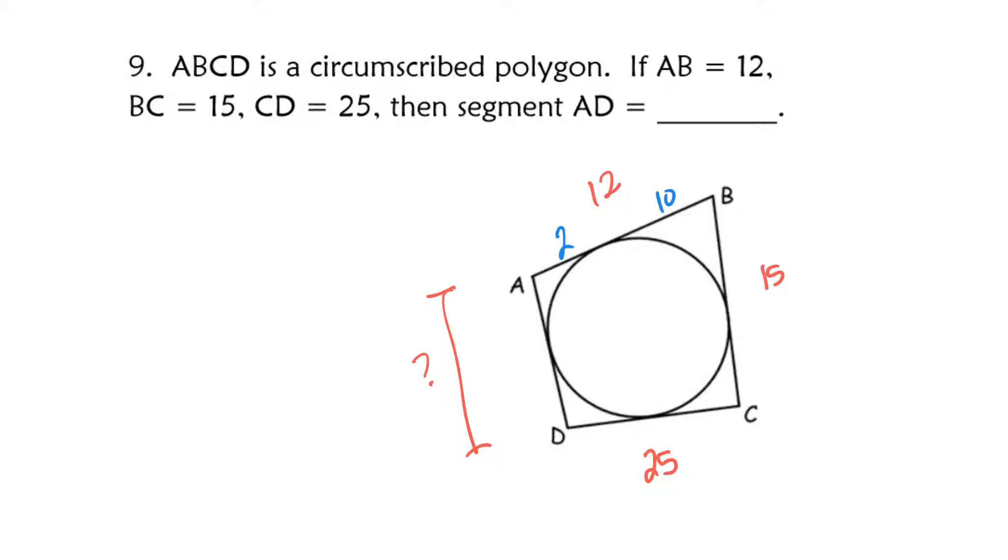All right, so that means if this is 10, then this section here has to be 10. If all of BC is 15, that portion is 10, this has to be 5, so that means this tangent segment has to be 5.